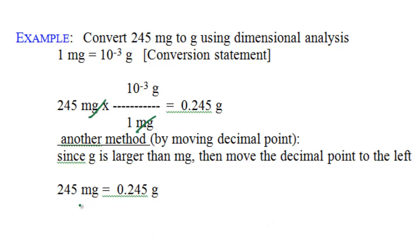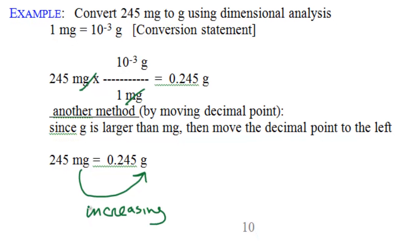There is another method for prefix conversions within the international system: moving the decimal point left or right. Going from milligrams to grams means going from a small unit to a big unit, so the number decreases — move the decimal point to the left. Since milligram is 10 to the negative 3 grams, move the decimal point 3 places to the left: 1, 2, 3, yielding 0.245 grams.